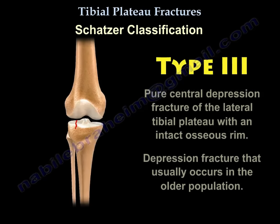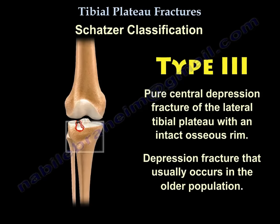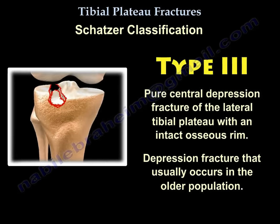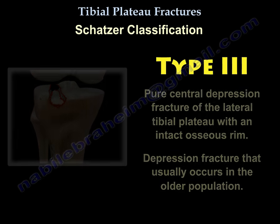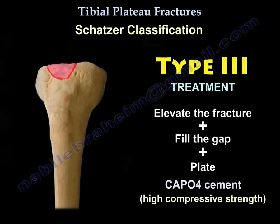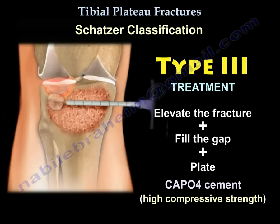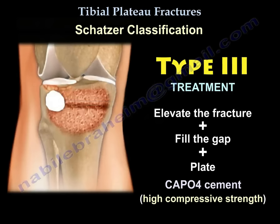Type 3 is a pure central depression fracture of the lateral tibial plateau with an intact osseous rim. It is just a depression fracture that usually happens in the older population. Treatment is to elevate the fracture, fill the gap, add a plate, and you can add calcium phosphate cement which has a high compressive strength. A balloon may be used to help elevate the depressed fragment and fill the gap with calcium phosphate cement.